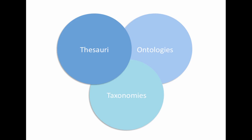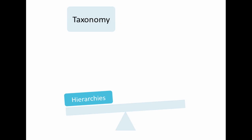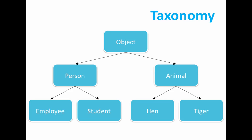A taxonomy model is the light variant of a control vocabulary. The taxonomy covers terms which are exclusively accorded to a hierarchical structure in order to classify a certain range of topics. Here's an example showing a classification of objects in available subclasses. I can illustrate the hierarchies, but not the relations.